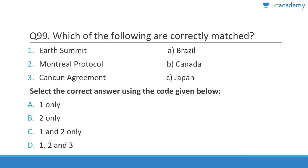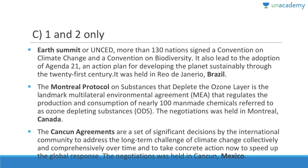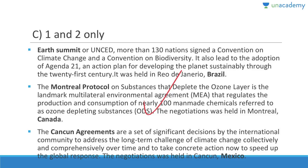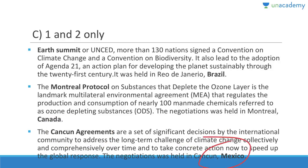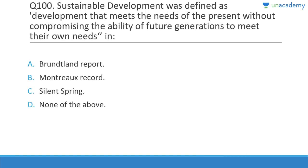Question 99: Earth Summit is in Brazil (Rio de Janeiro) — correct. Montreal Protocol is from Canada — correct. Cancun Agreement is in Mexico, not Japan — correct. Answer is 1, 2, and possibly 3. The Montreal Protocol concerns ozone-depleting substances and is considered one of the most successful international treaties. The Cancun Agreement addresses the long-term challenge of climate change. Cancun is a city in Mexico.